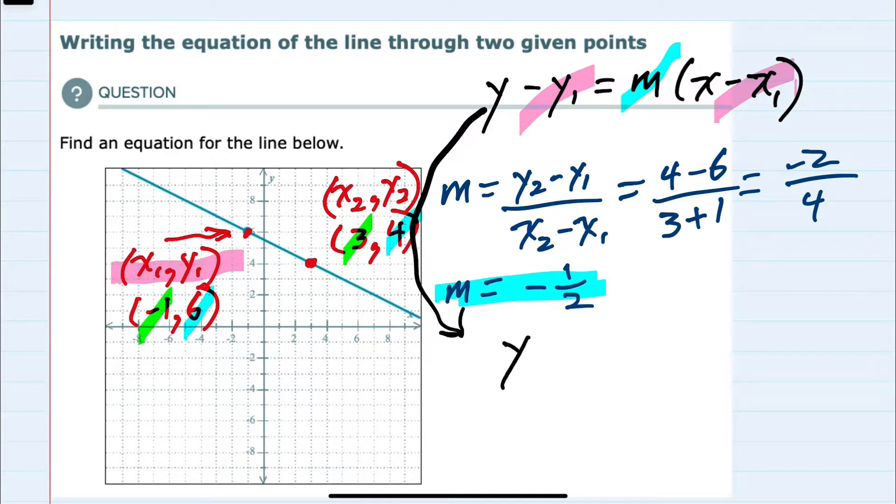we have y minus y1, where y1 is 6, so that's minus 6, equals the m, which is minus 1 half, times x minus x1. We said that x1 is a minus 1, so it's minus a minus 1 or plus 1. Since we weren't given a form to leave the equation in,